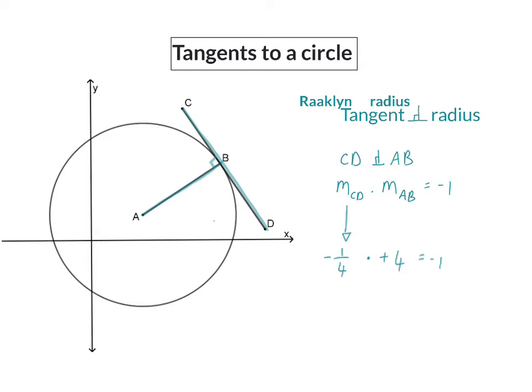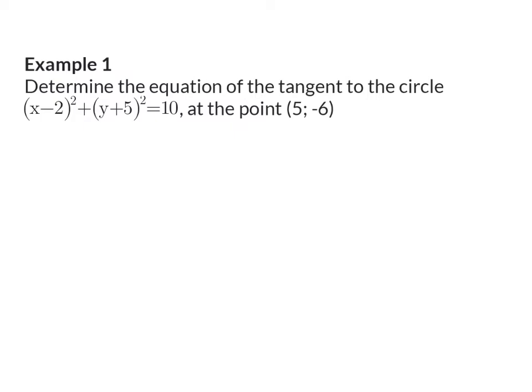Let's have a look at an example of how we can use this in analytical geometry. Example one: Determine the equation of the tangent to the circle at the point (5, -6). We are asked to determine the equation of a tangent, and a tangent is a straight line in the form y = mx + c.